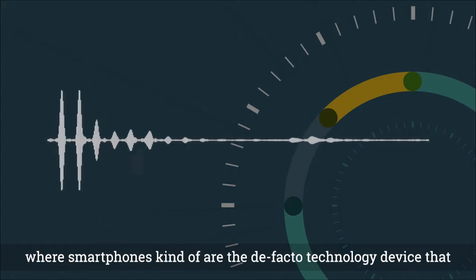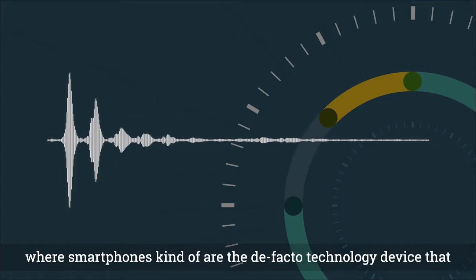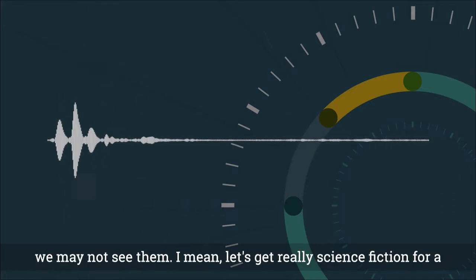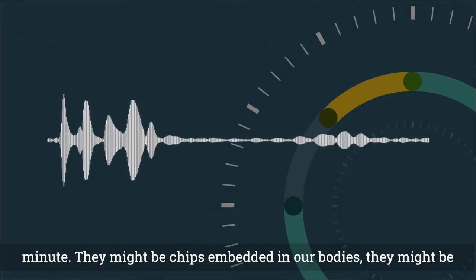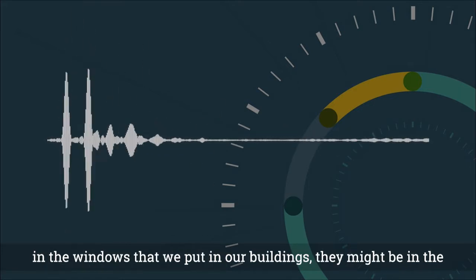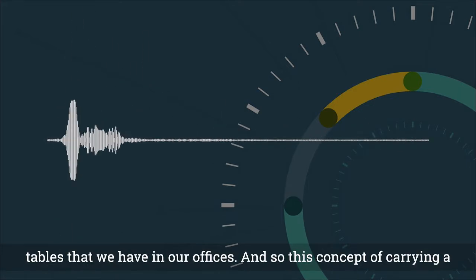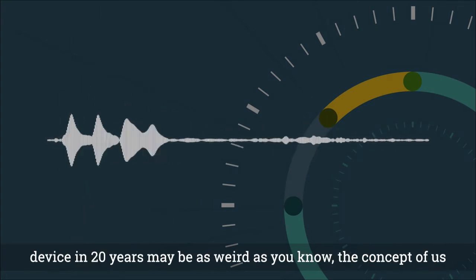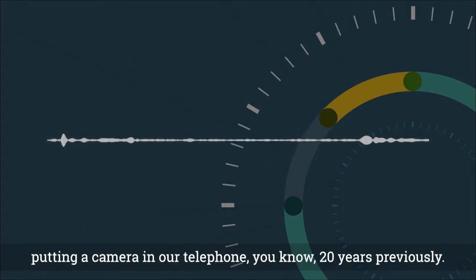20 years later, we're now in a world where smartphones kind of are the de facto technology device that people use every day. 20 years from now, they may not be phones. We may not see them. I mean, let's get really science fiction for a minute. They might be chips embedded in our bodies. They might be in the windows that we put in our buildings. They might be in the tables that we have in our offices. And so this concept of carrying a device in 20 years may be as weird as the concept of us putting a camera in our telephone 20 years previously.